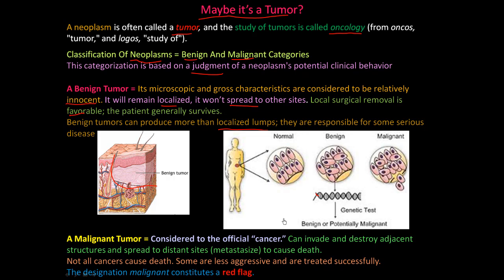A malignant tumor is considered to be the official cancer. When people say they have cancer, they are usually referring to a malignant tumor. Cancer, neoplasm, neoplasm, tumor — they're all kind of interchangeable, but if you want to be specific and technical, cancer should be referred to as a malignant tumor. It can invade and destroy adjacent structures, and it can spread to distant sites, which is called metastasis — they can metastasize — and they can cause death.